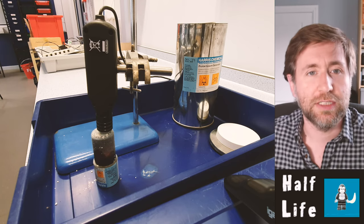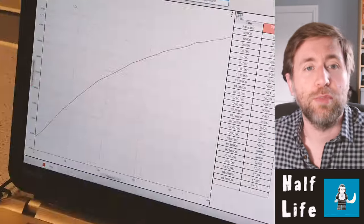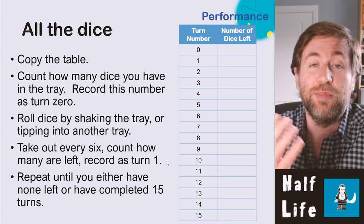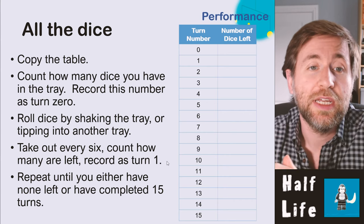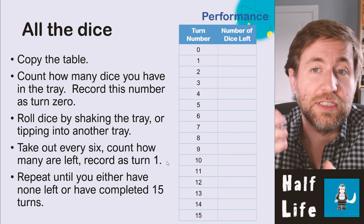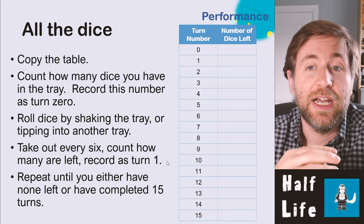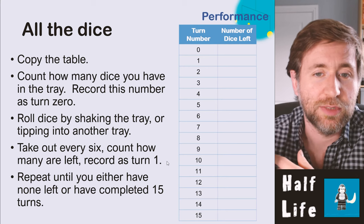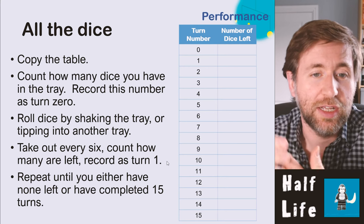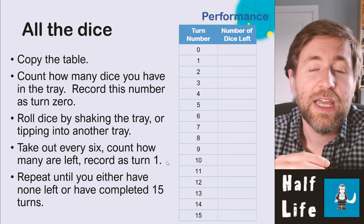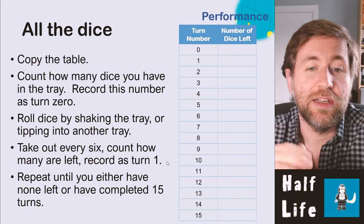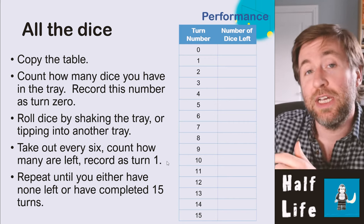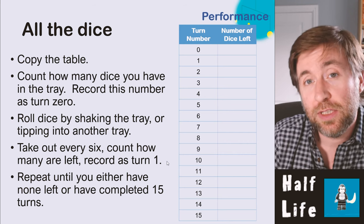We can use a model I call 'all the dice' — you may do this in class. You need a large number of dice and a simple table. Roll all the dice at once, count how many come up with a six and remove them, record the number of dice left, and repeat for about 15 turns. The turn number represents time in our model.